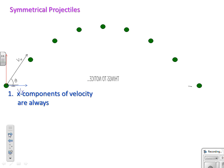A symmetrical projectile is one that is launched from some height, some position, and it lands at the same vertical position. It's launched at some angle theta with some initial speed v-naught. That initial velocity we can break up into two components, we'll call v_x and v-naught-y. For a projectile like this, really for any projectile at all, some things we can notice.